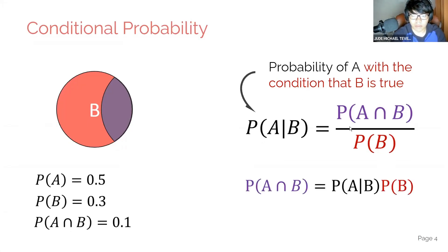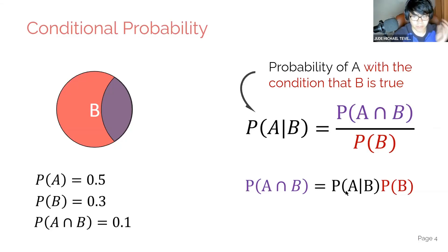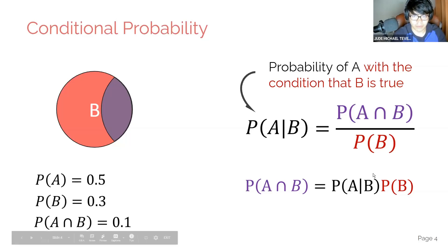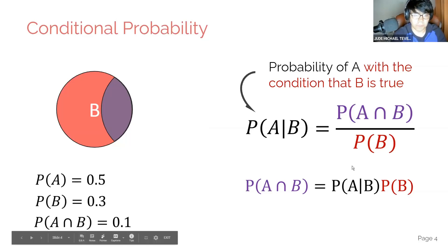We can rewrite this as follows: the probability of the intersection of A and B is essentially the product of the conditional probability of A given B, times the probability of B.